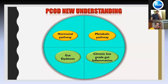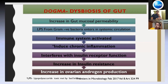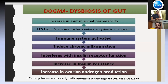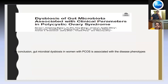Going further, other hypotheses have been postulated. The first is a metabolic pathway wherein there is a problem with signaling caused due to decreased myo-inositol, leading to hyperinsulinemia. The next is gut dysbiogenesis — there is increased gut mucosal permeability which causes gram-negative bacteria to enter circulation, causing low-grade chronic inflammation which interferes with insulin receptor function, leading to insulin resistance, hyperinsulinemia, and ovarian androgen production.